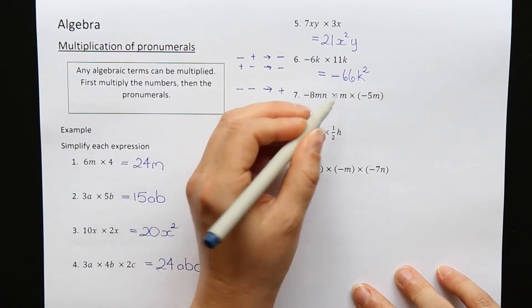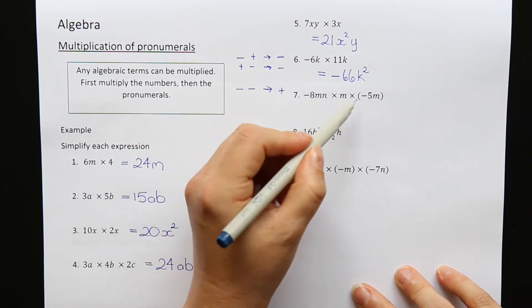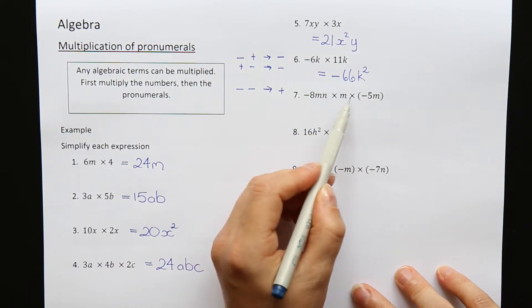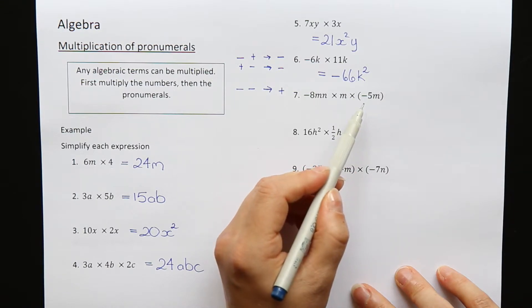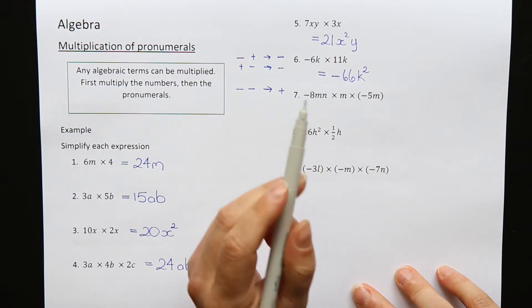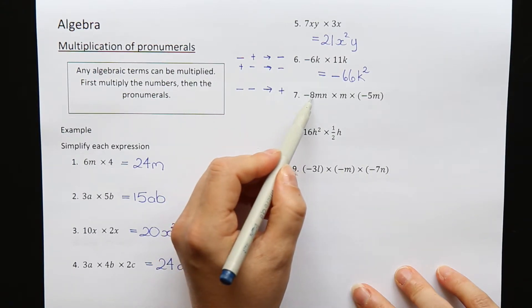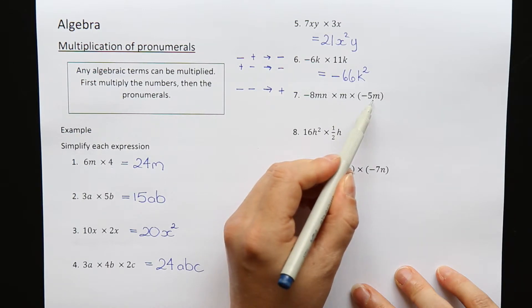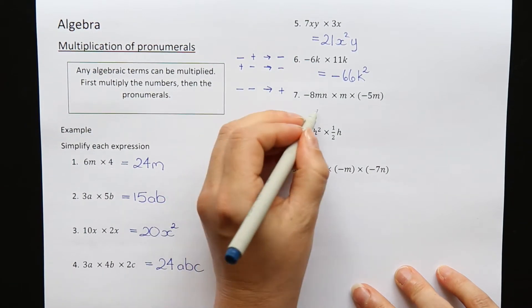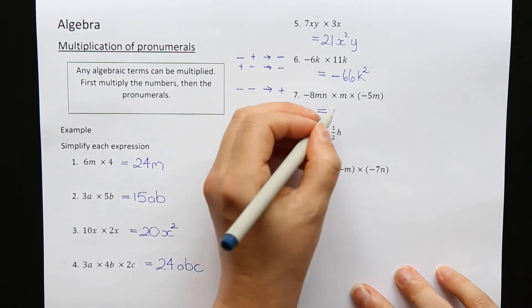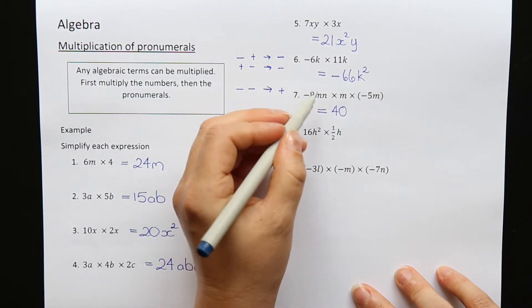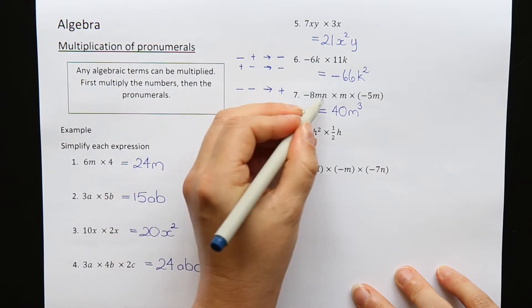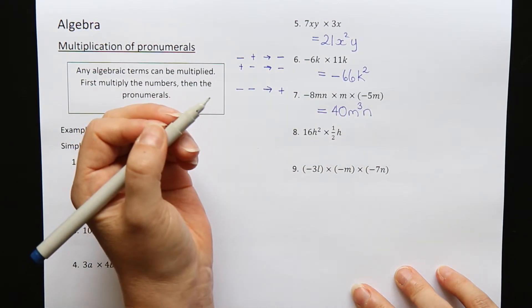Question 7: minus 8mn times m times minus 5m. The brackets here point out that there's a minus sign you're multiplying by a negative. First multiply the numbers. We have a minus 8, then multiply by a minus 5. Two negative numbers make a positive, so the minus signs disappear. 8 times 5 is 40. Now let's look at all the letters. I have m, m, m—there's three, so it's m cubed. I also have 1n, so 40m cubed n.